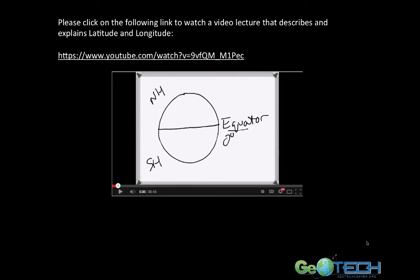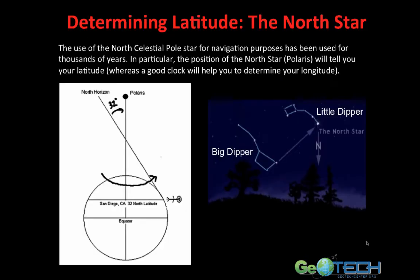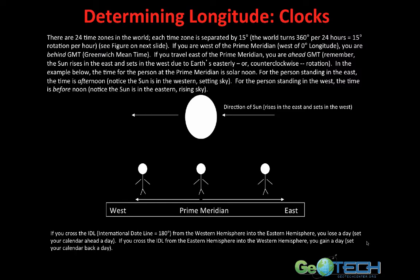Welcome back. At this point, I am extremely confident that you have a good understanding of what latitude is and what longitude is. In addition to that, you now know how to determine your latitude by using the north celestial pole star as your reference point.